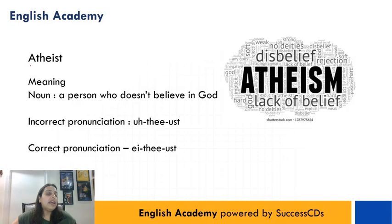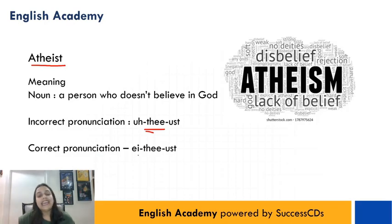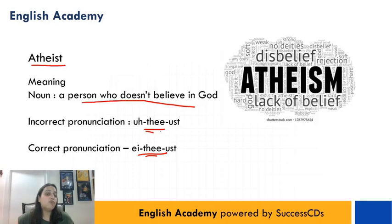The next word is A-T-H-E-I-S-T. Log usually isse pronounce karte hain 'atheist', but iski correct pronunciation is 'atheist'. Aur iska matlab hota hai a person who doesn't believe in God, ya naastik. Toh aage chalke agar aap kisi ko bolein ye naastik hai, bhagwaan pe vishwaas nahi karta, toh woh insaan 'atheist' nahi hota, woh insaan hota hai 'atheist'.